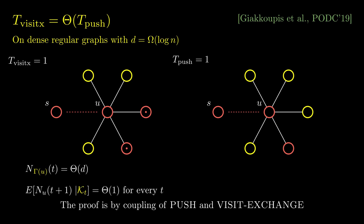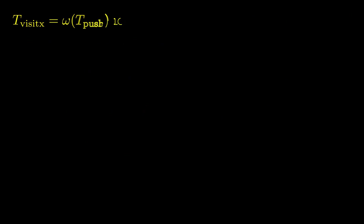Notice that d being at least logarithmic is critical in the argument. In this paper, we present techniques to circumvent that requirement to derive bounds for sparse graphs. We show that push and visit exchange do not have the same asymptotic runtime in all regular graphs — this is our first new result.